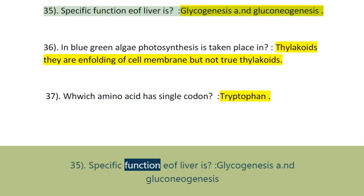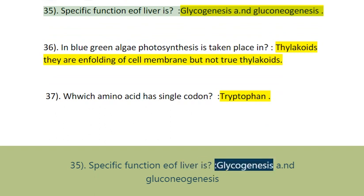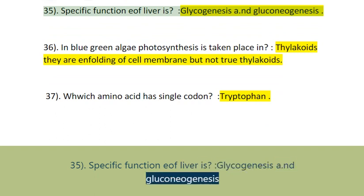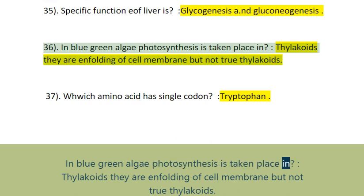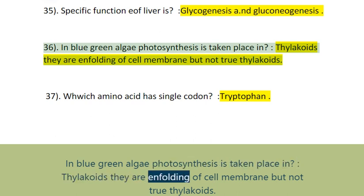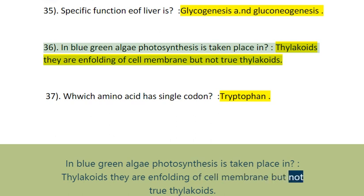Question 35: A specific function of the liver is glycogenesis and gluconeogenesis. Question 36: In blue-green algae, photosynthesis takes place in thylakoids — they are unfolding of cell membrane, but not true thylakoids.